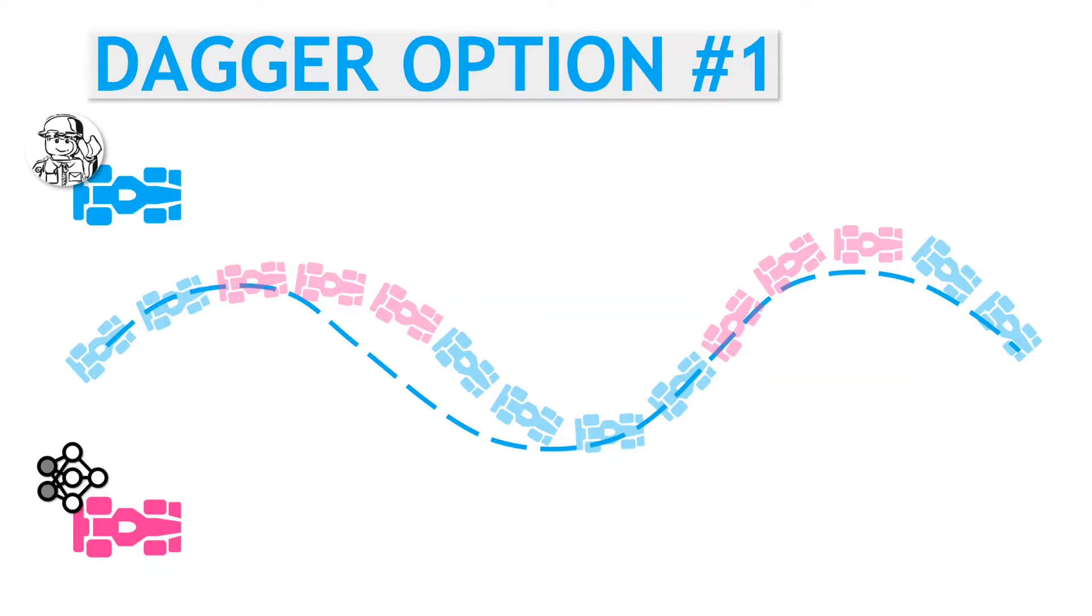Note that the diagram is a little misleading. Typically, the expert driver is controlling most of the time, with the policy only controlling for very short periods. So from this driving pattern, we can extract our training data.